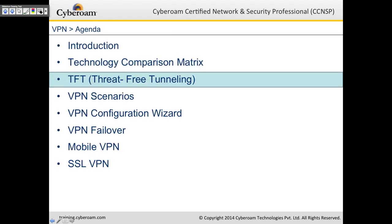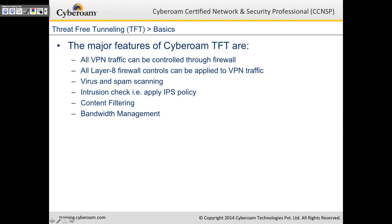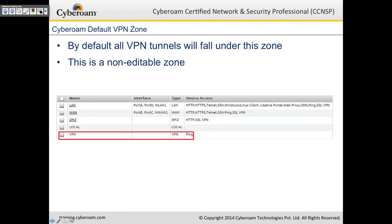Now let's look at threat-free tunneling. Major features of CyberROM threat-free tunneling include: all VPN traffic can be controlled through the firewall, all layer 8 firewall controls can be applied to VPN traffic, you can scan VPN traffic for virus and spam, apply IPS policy on VPN, do content filtering, and bandwidth management. By default, all VPN tunnels fall under the VPN zone, which is an automatic non-editable zone created by default in CyberROM.